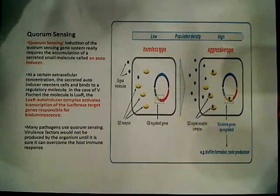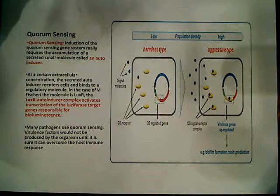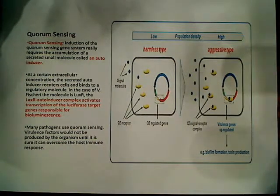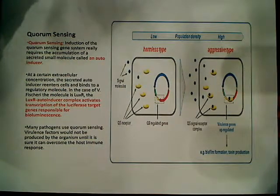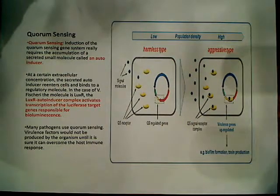Many pathogens use quorum sensing, and that's why this could be important for biomedical studies. Pathogenic bacteria are not going to necessarily attack the body right away. They're going to wait until they know they can overcome the organism's immune system — until their concentrations are high enough. They might use quorum sensing to determine whether or not their numbers are large enough to overcome the immune response.